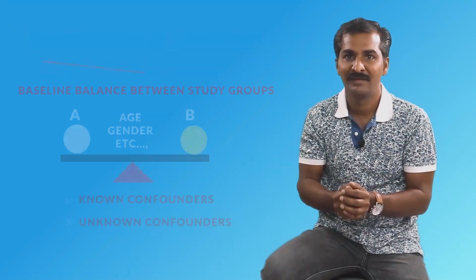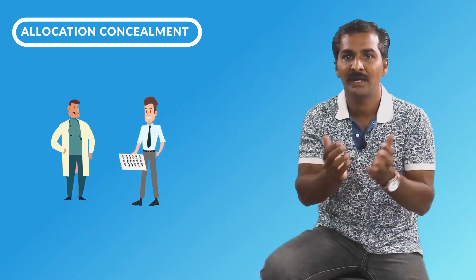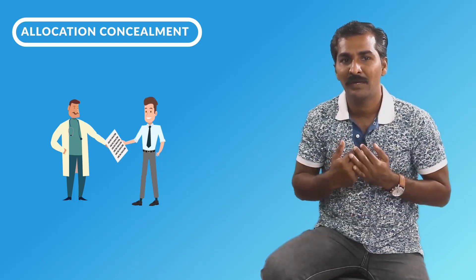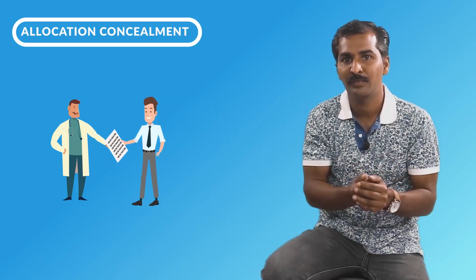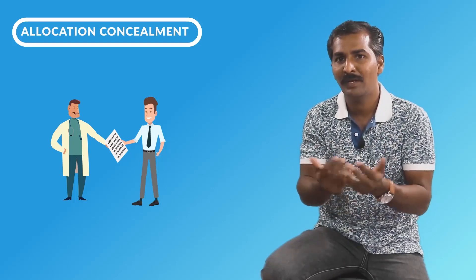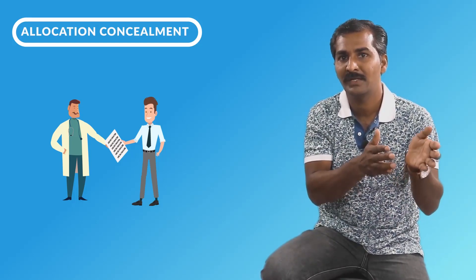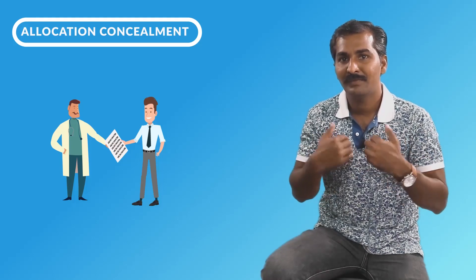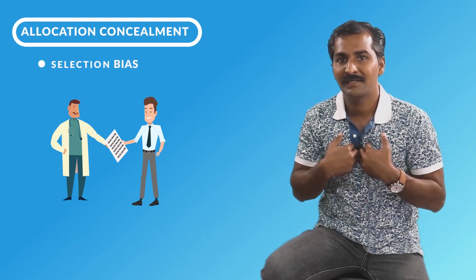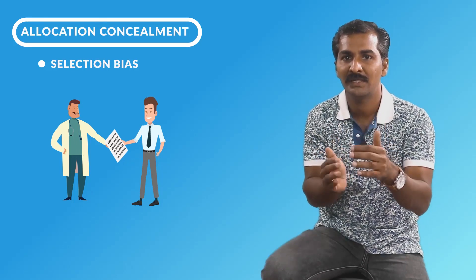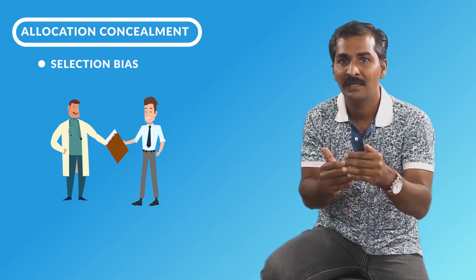The second process is allocation concealment. If I generate the allocation sequence and hand it over to the researcher openly, and I know my first patient is going into treatment group A, I may call a patient whom I prefer to be in treatment group A because I feel that treatment is very effective — resorting again to selection bias. So the allocation sequence which is generated has to be concealed from the investigator.